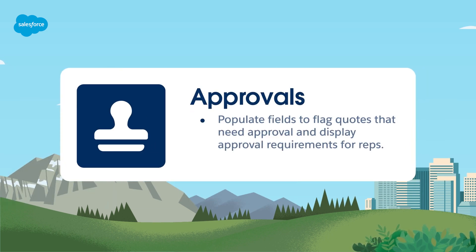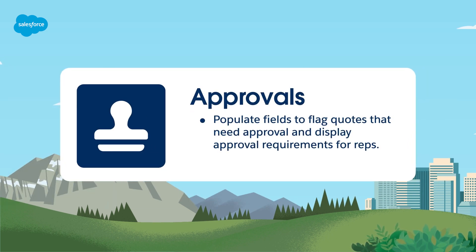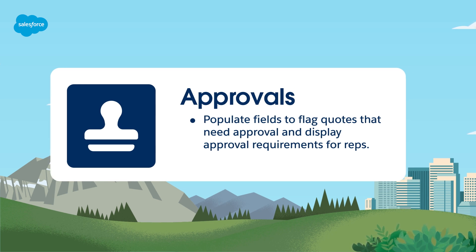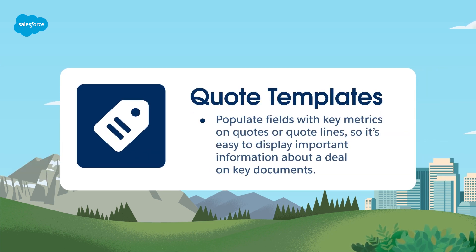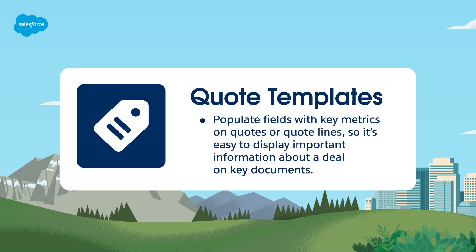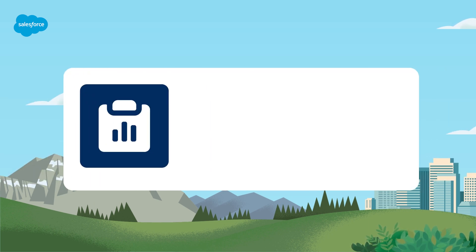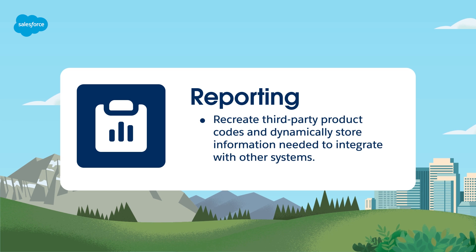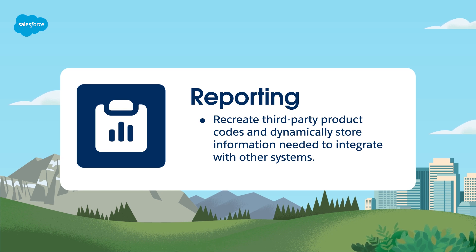Next, price rules can populate fields to flag quotes that need approval and display approval requirements for reps. Price rules can also populate fields with key metrics on quotes or quote lines, so it's easy to display important information about a deal on key documents. Finally, price rules are useful if you run reports, recreate third-party product codes and dynamically store information needed to integrate with other systems.